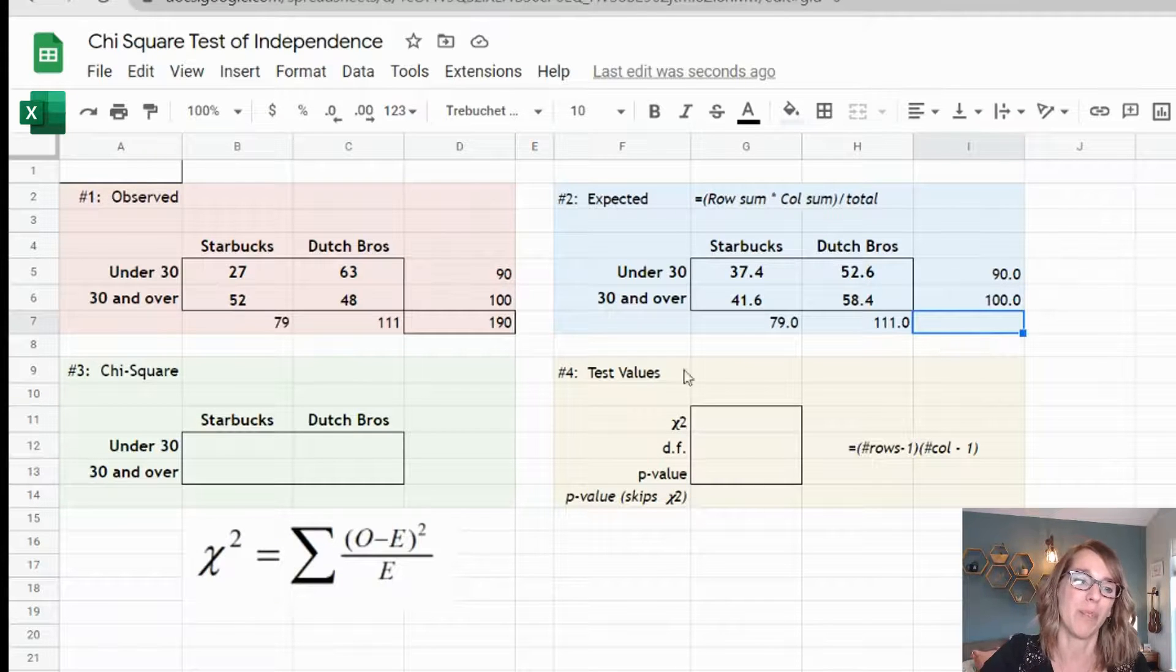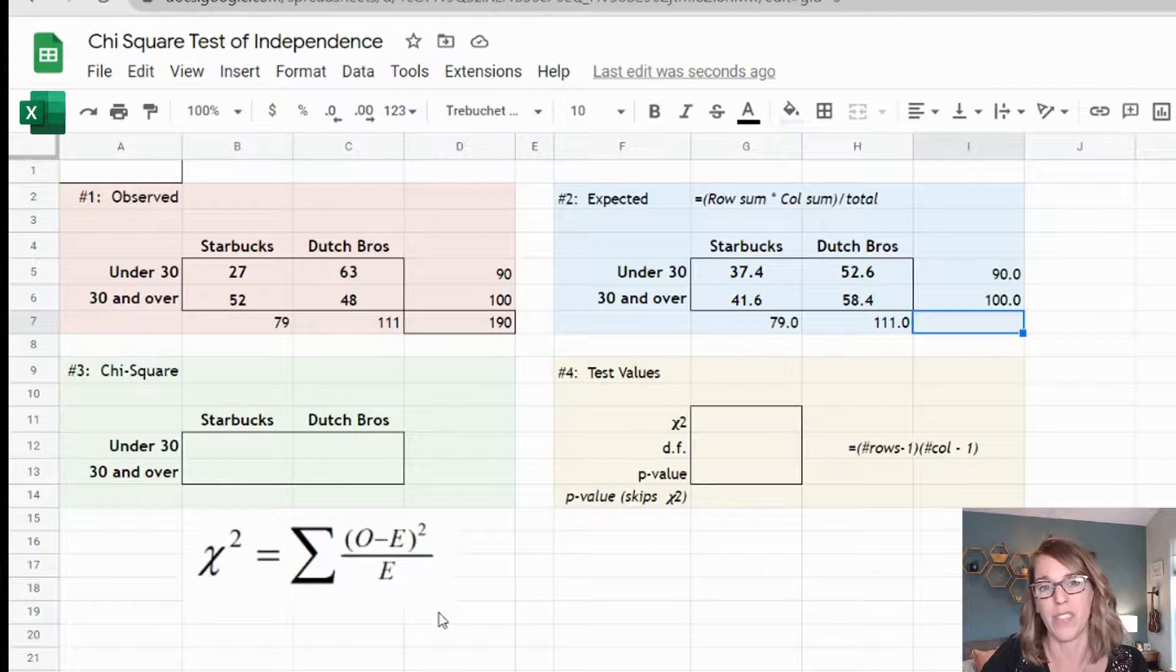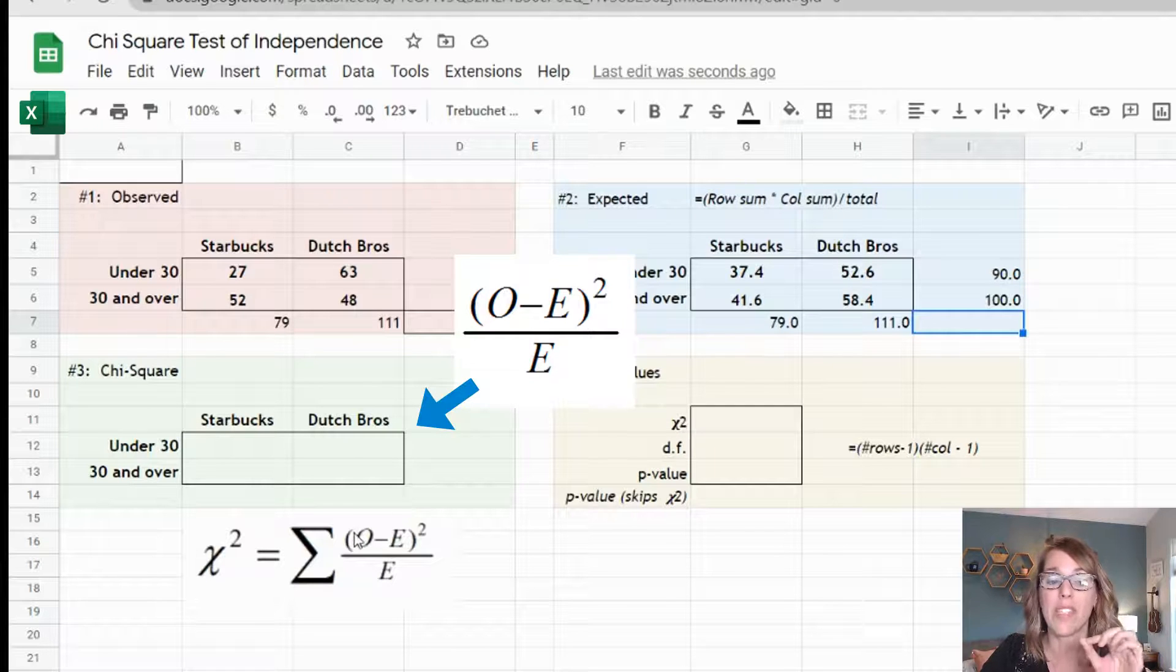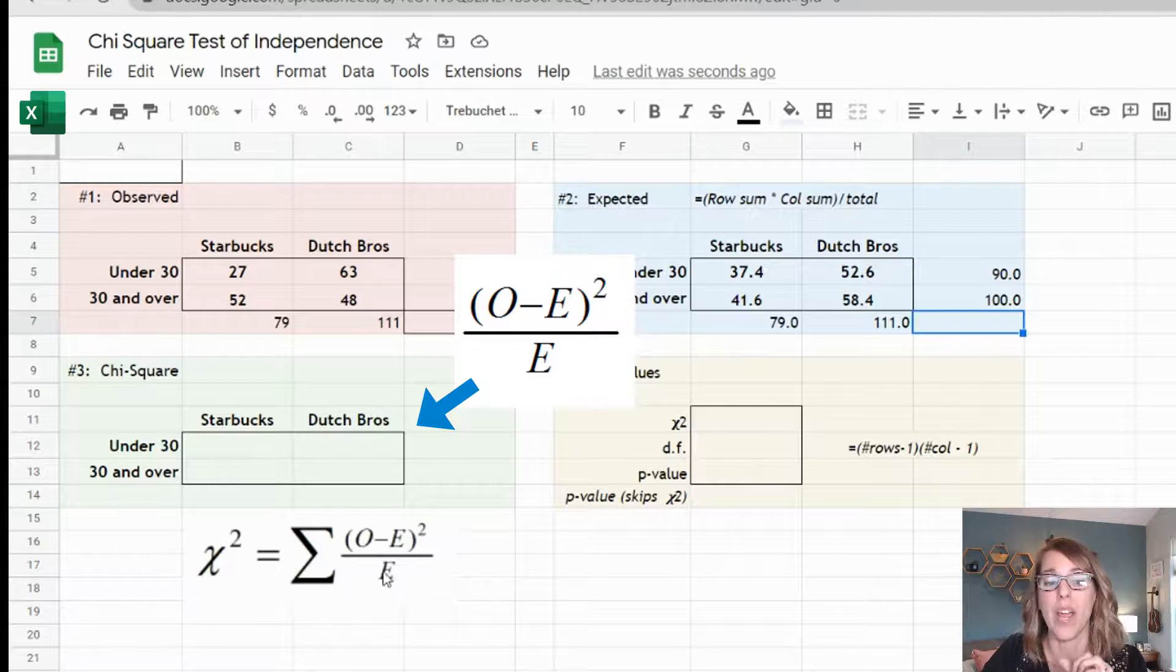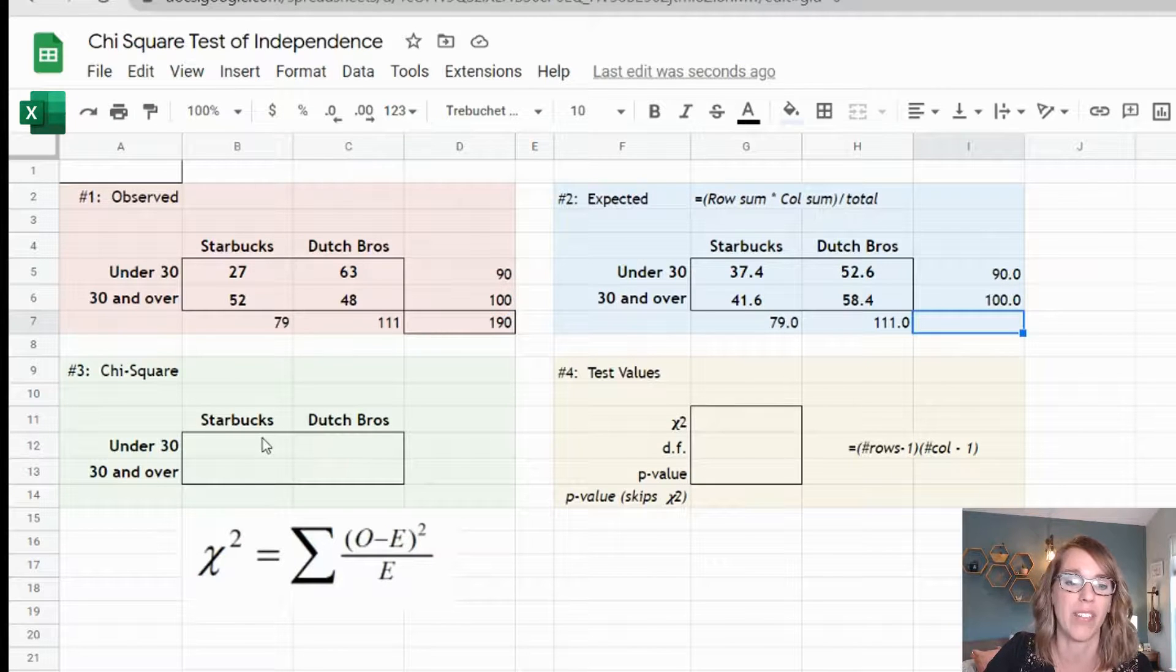Next I'm going to move on to step number three, and that's coming up with the fractional part of the summation. Each of the cells in my table are going to have this observed minus expected squared divided by expected, and then I'm going to add all four of those values up. So let's start working through each of these.